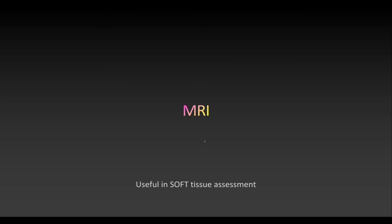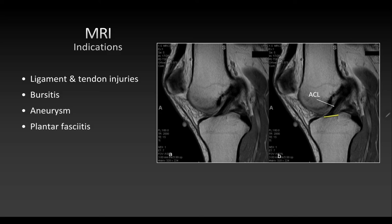Apart from x-rays, MRI — magnetic resonance imaging — is another way to assess injuries in the lower limb, especially for soft tissue assessment. MRI is indicated for soft tissue injuries such as ligament damage; for example, the ACL (anterior cruciate ligament) extending from the upper surface of tibia to the medial surface of the lateral condyle of femur can be visualized. Inflamed bursae along the anterior aspect of the knee, popliteal artery aneurysms, and plantar fasciitis can also be assessed by MRI.